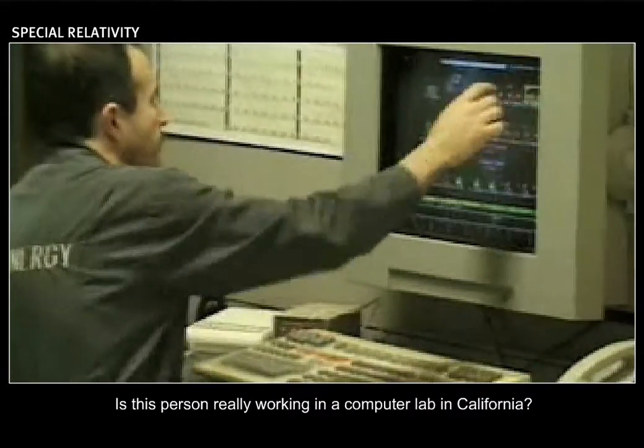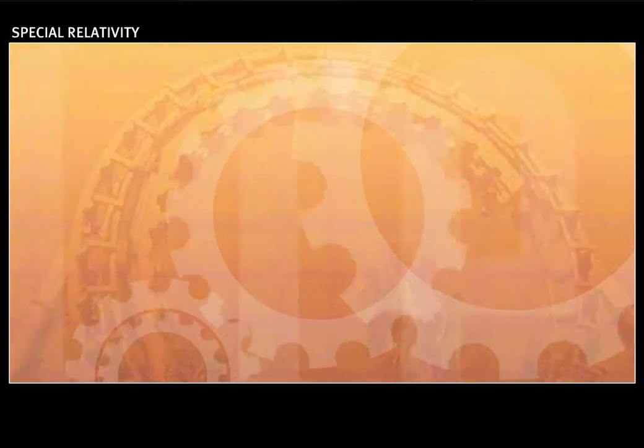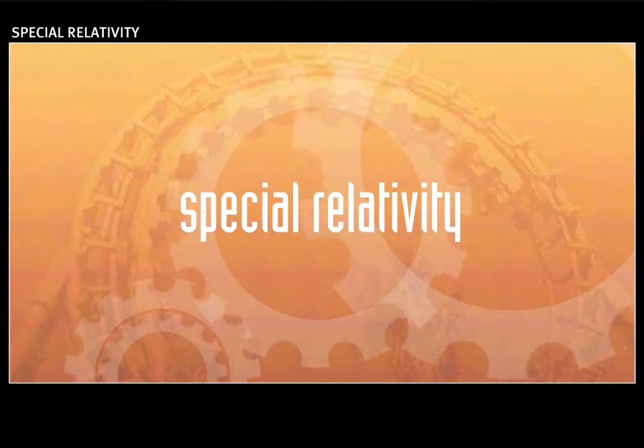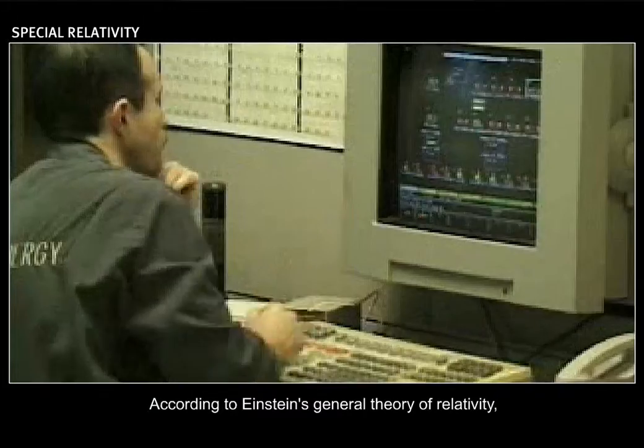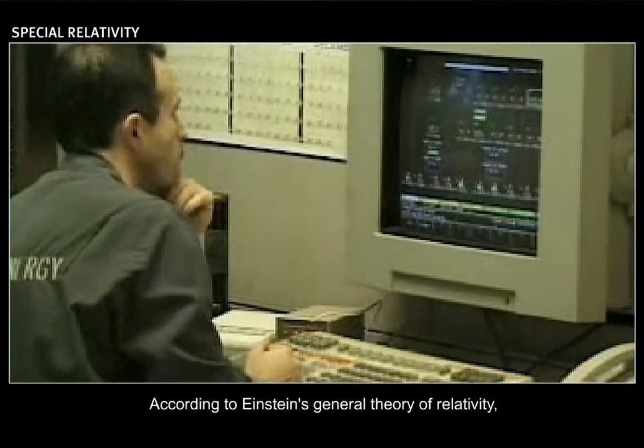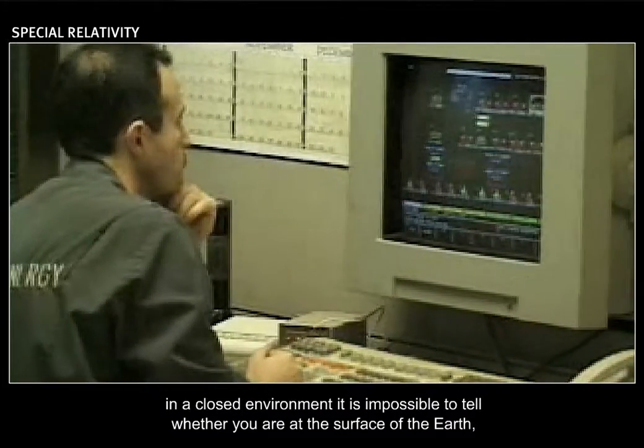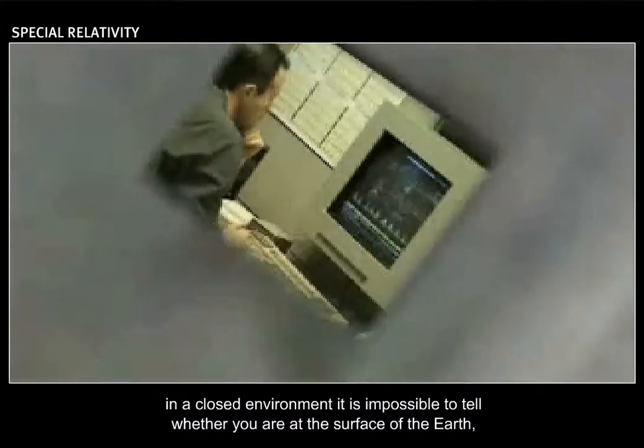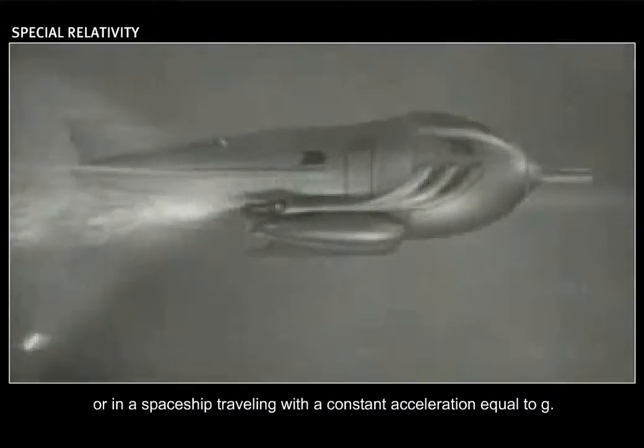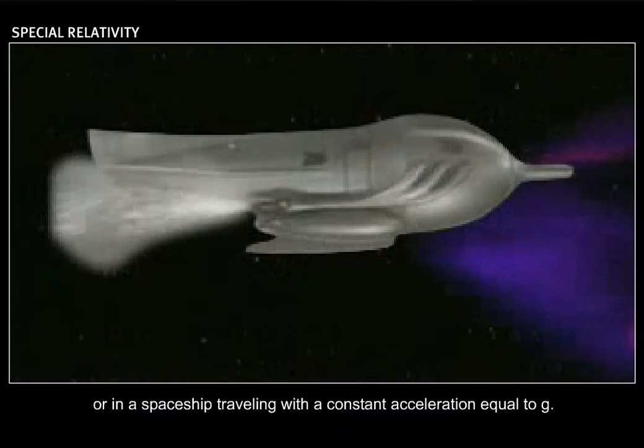Is this person really working in a computer lab in California? According to Einstein's general theory of relativity, in a closed environment it is impossible to tell whether you are at the surface of the earth or in a spaceship traveling with a constant acceleration equal to g.